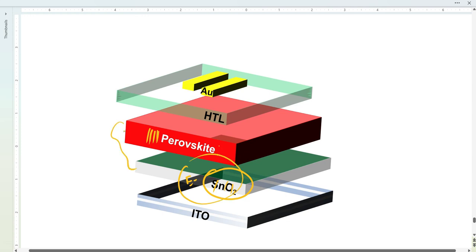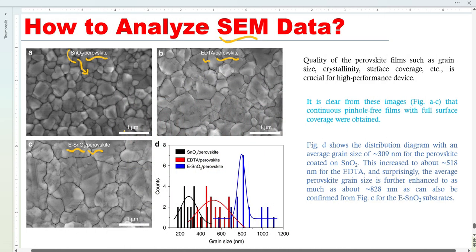When we simply deposit perovskite on tin oxide, we can see the grain sizes are smaller. We can see there are a lot of grains, smaller grains, and we know that small grains produce... do you know what?